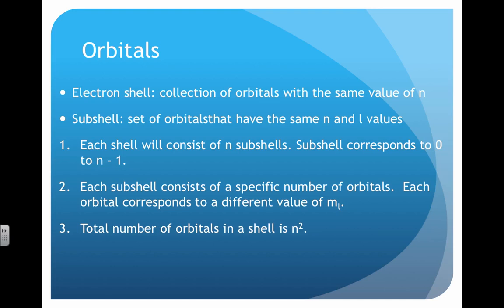In terms of orbitals themselves, there is an electron shell, and these are a collection of orbitals. I call these sublevel types, but this book calls it electron shells. A subshell is a specific orbital that has the same number of n and l values. So for instance, the s's would all be 0, p's would all be 1, and so on. And each shell will consist of a certain number of subshells, and it corresponds to 0 to n minus 1, as we said before. And then each one will have a specific number of orbitals, which we call m sub l. And then the total number of orbitals within a shell will always be n squared.